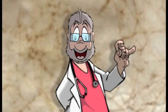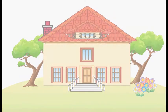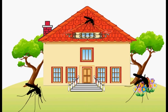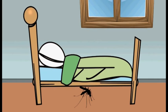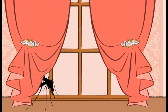Este mosquito normalmente vive en el interior de la casa o en los alrededores: en el parque, en el jardín, en el balcón o dentro de la casa, en el dormitorio, en el baño, la cocina, debajo de la cama o de los muebles, y hasta detrás de las cortinas.